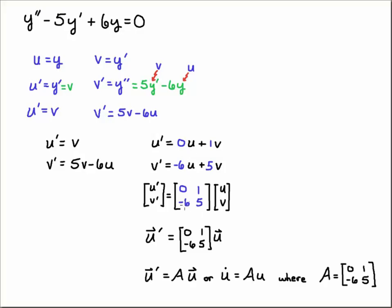So the first column here was multiplied by u. The second column is multiplied by v. You can double-check your work. u times 0 is 0. v times 1 is v. So u-prime is equal to v. Minus 6 times u plus 5v gives us the second equation. v-prime is equal to minus 6u plus 5v.